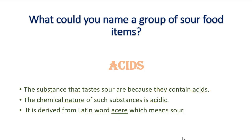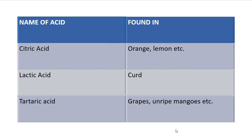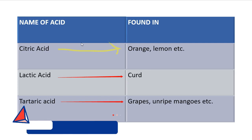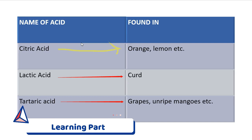Acids are further divided into different types: citric acid, lactic acid, tartaric acid, oxalic acid, and so on. Citric acid is found in oranges. Lactic acid is found in curd. Tartaric acid is found in grapes and unripe mangoes. You need to keep these in mind — they are given in your textbook.